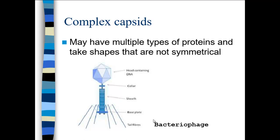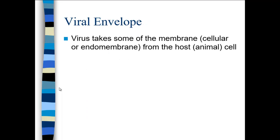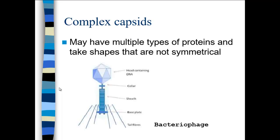Here's an interesting virus — a bacteriophage. 'Phage' is another word for virus; bacteriophage implies it infects bacteria. It has an icosahedral head where the DNA is contained. It has a neat delivery mechanism: tail fibers and a base plate adhere to the bacterial surface, and the sheath injects viral DNA directly into the bacteria. The icosahedral head never enters the bacterial cell — the rest of the virus acts as a delivery system.